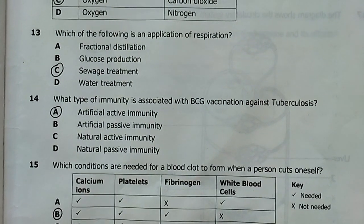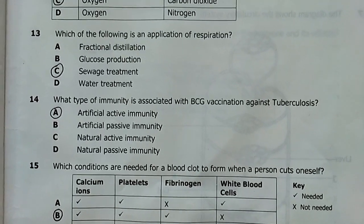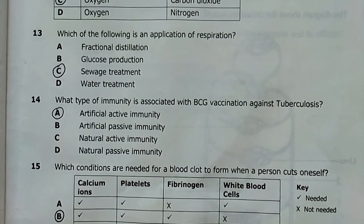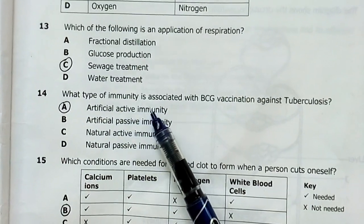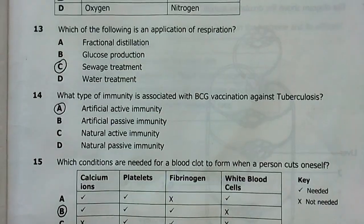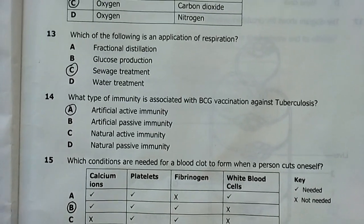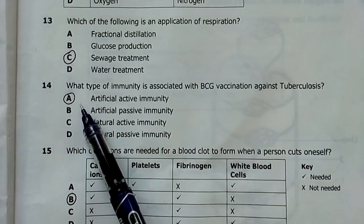14, what type of immunity is associated with BCG, vaccination against tuberculosis? Artificial active immunity. This is your last topic in your grade 11 biology. A. That's our answer.